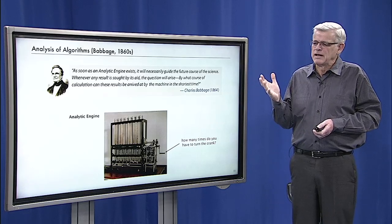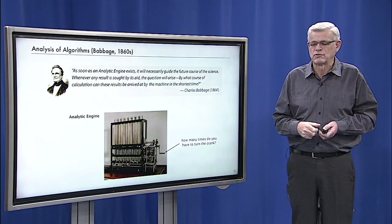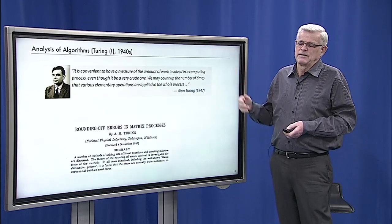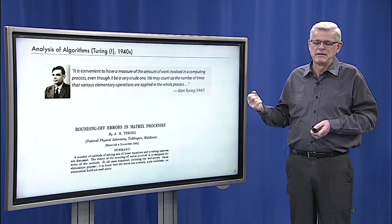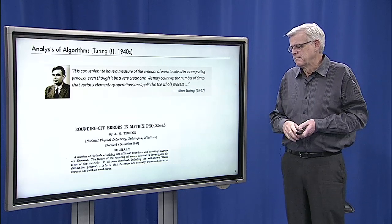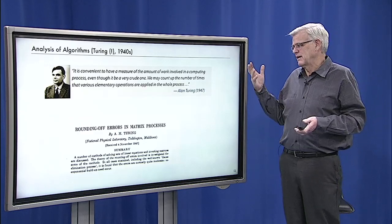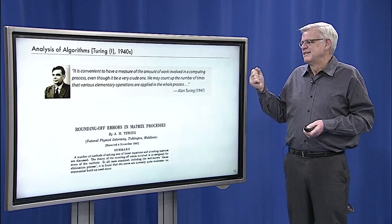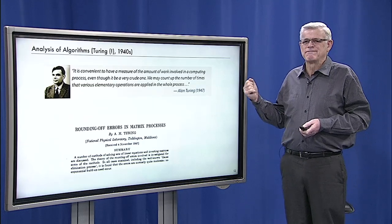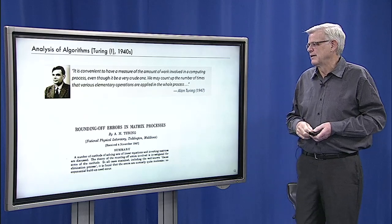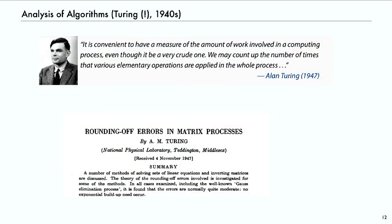And computers were expensive and slow and used energy. So minimizing the cost of computation was always very important. Even Turing, who is the founder of theoretical computer science, could see the importance of these kinds of practical questions. We want to have a measure of the amount of work involved in the computing process, even though it might be a crude one. We count up the number of times that elementary operations are applied in the whole process in order to figure out how much work it's going to take to help in designing efficient computation.